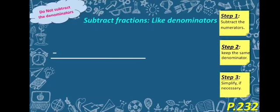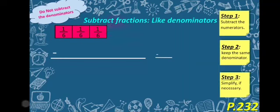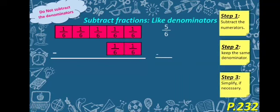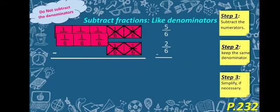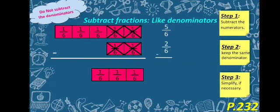Let's see our first example. Here we have 5 over 6, and I want to subtract 2 over 6 from it. So let's cross it, let's take it away, and this is what we have left. To subtract fractions without the help of models, we need to follow three simple steps.